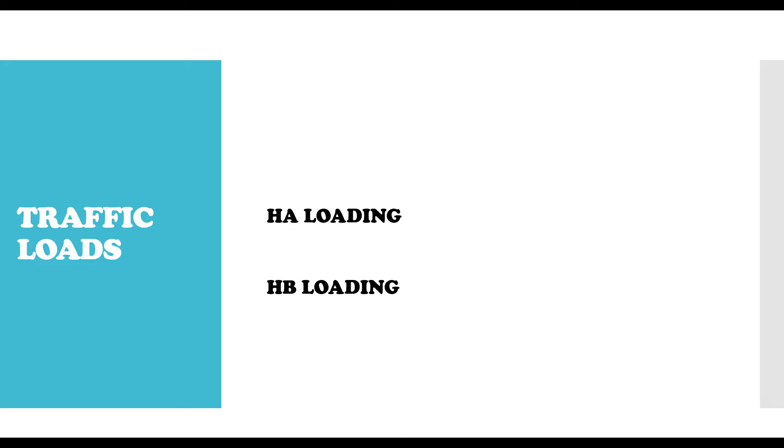Traffic load is majorly divided into two: we have the HA loading and the HB. HA loading, as I've defined in the previous video, is the loading that represents the normal traffic on highway bridges, while the HB loading represents abnormal traffic on highway bridges. Most of the time we have a combination of HA and HB loading, which can include combinations of dead load and live load, dead load and HA loading, or dead load and HA plus HB. But this video is just going to be talking about HB loading.